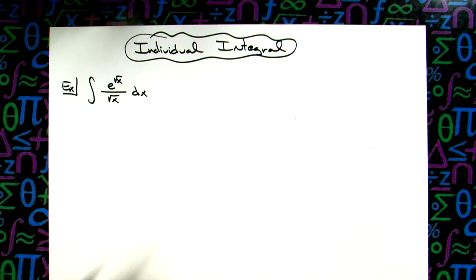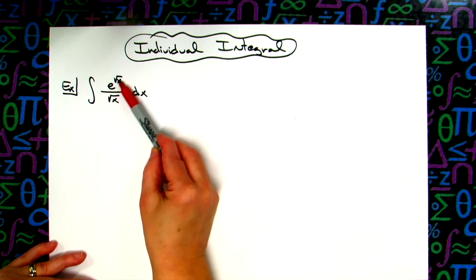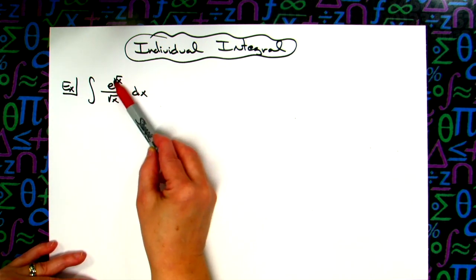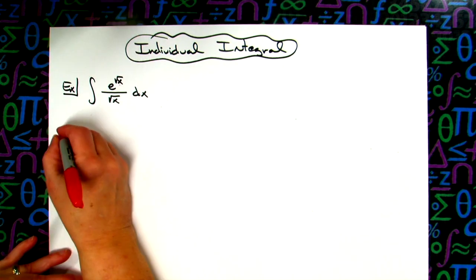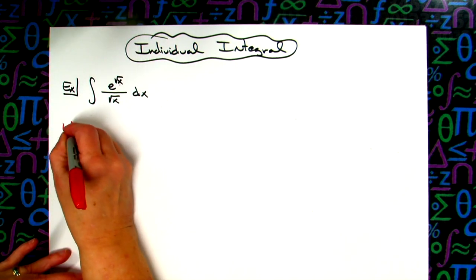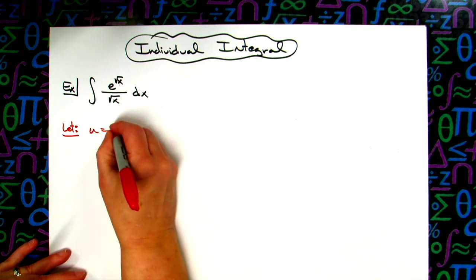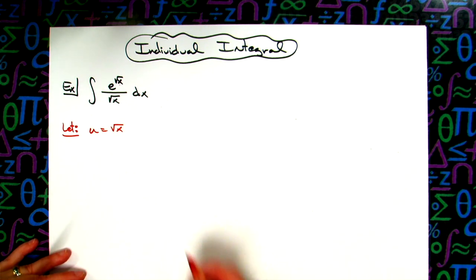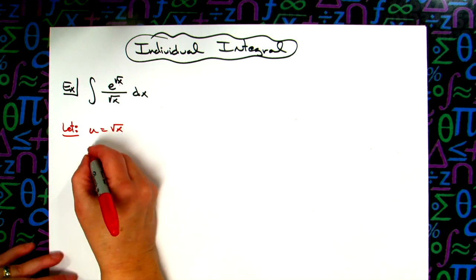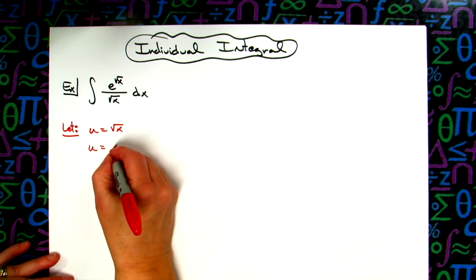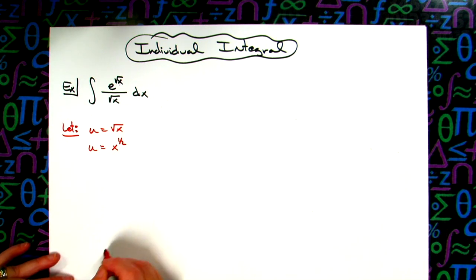The easiest way to do this is to let your u be whatever e is raised to. So I'm going to let my u be the square root of x. Now I need to take the derivative of that, so it is going to be easier if I look at this as x raised to the 1/2 power.